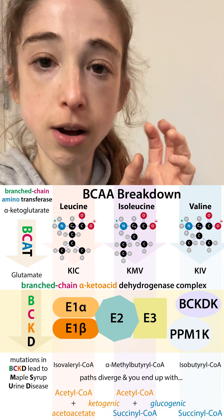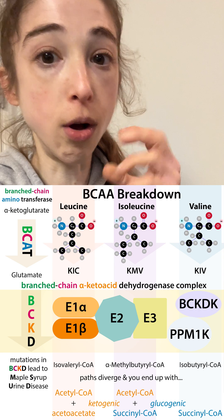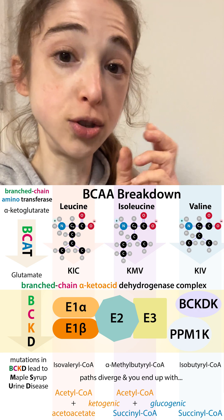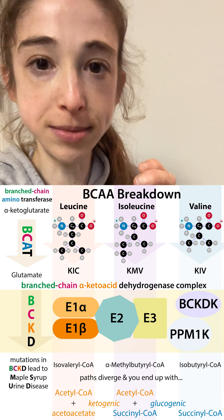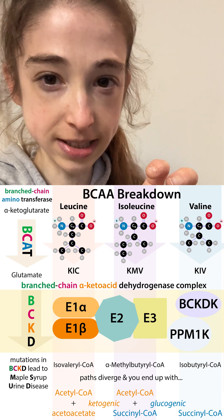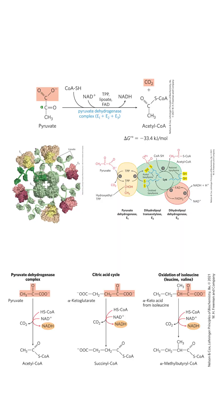Mutations in different parts of the complex can all cause this disorder called MSUD, or maple syrup urine disease. This complex and this process is very similar to alpha-keto acid dehydrogenase complexes for things like pyruvate. They actually use some of the same subunits, like this E3 subunit.